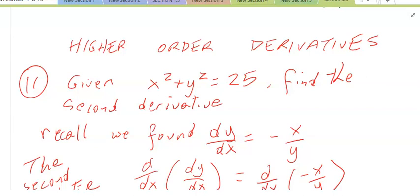Hello everyone. Today we continue our discussion on implicit differentiation by talking about higher order derivatives. Given x squared plus y squared is equal to 25, find the second derivative.